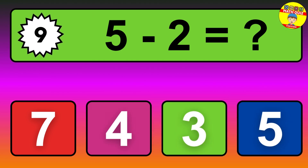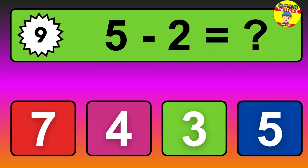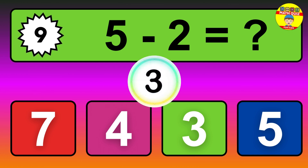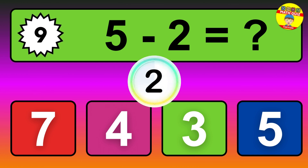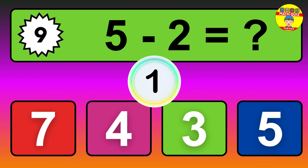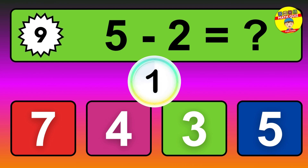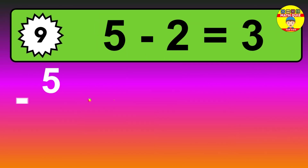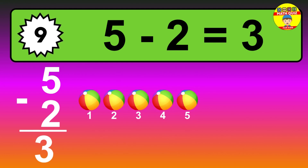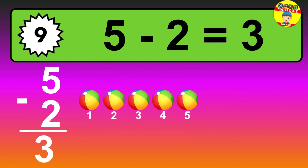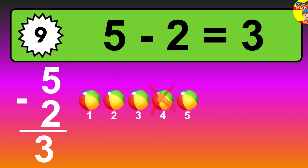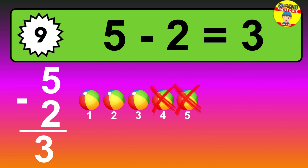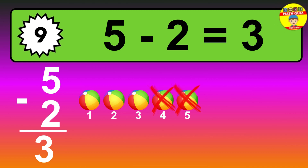Question nine: five minus two equals what? The answer is five minus two is three. Let's count it: one, two, three.